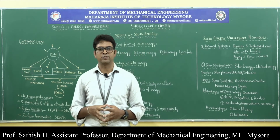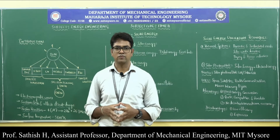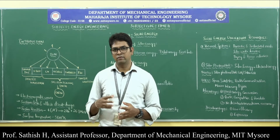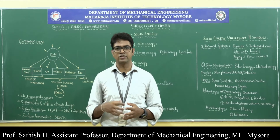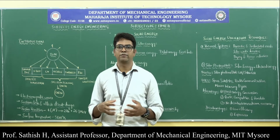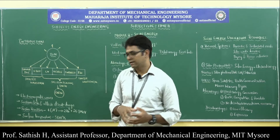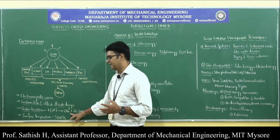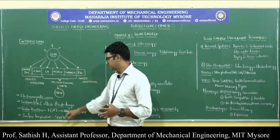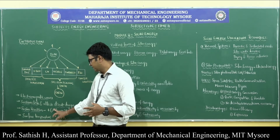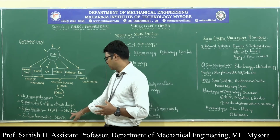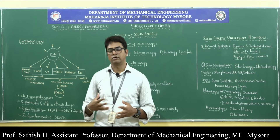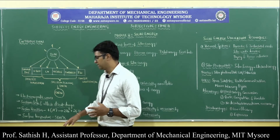An enormous amount of energy is produced in the Sun. There are two types of nuclear reactions: fission, where nuclei are divided to release energy, and fusion, where nuclei are combined. In the Sun, four hydrogen nuclei combine to form helium, represented as: 4¹H₁ → ²He⁴ + 26.7 MeV. This is the energy released by the fusion process.